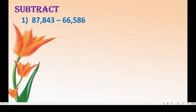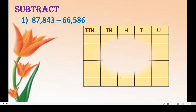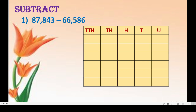First we will do one simple subtraction in the table, then we will move to our word problems. Here you can see the sum in horizontal arrangement; we will arrange this in vertical arrangement. We always write numbers from unit place. It is 87,843 minus 66,586 — a 5-digit number. We will subtract this, always beginning subtraction from the unit place. This is subtraction by borrowing.